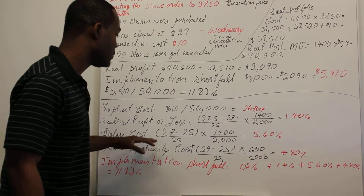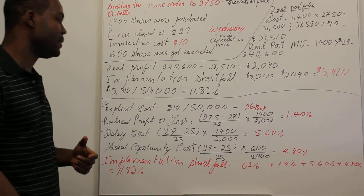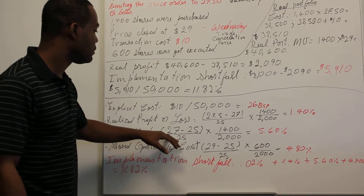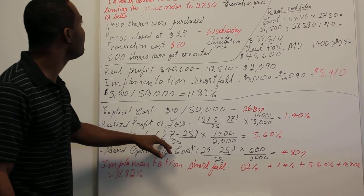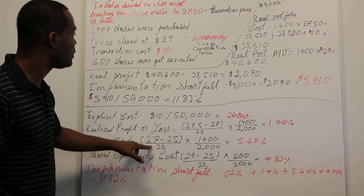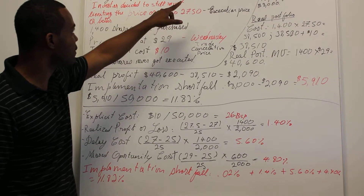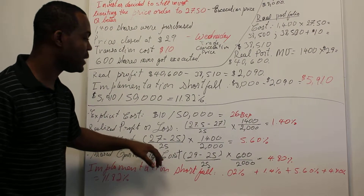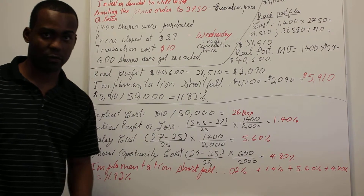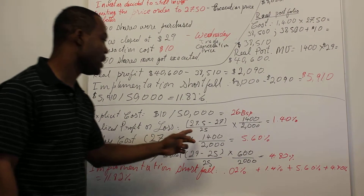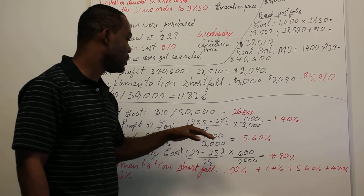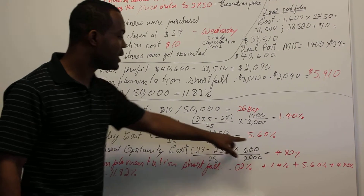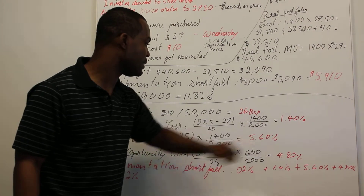The delay cost — the cost for not executing the trade on time — is the difference between the relevant decision price and the benchmark price, divided by the benchmark price, multiplied by the percentage of the portfolio that got executed, which is 1,400 divided by 2,000. That comes out to 5.60%.